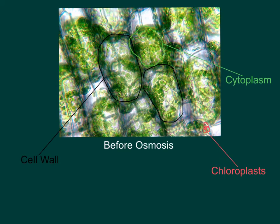As for osmosis, it is the transfer of water through cells without energy. This is important because the water firms the cell walls and the plant itself.